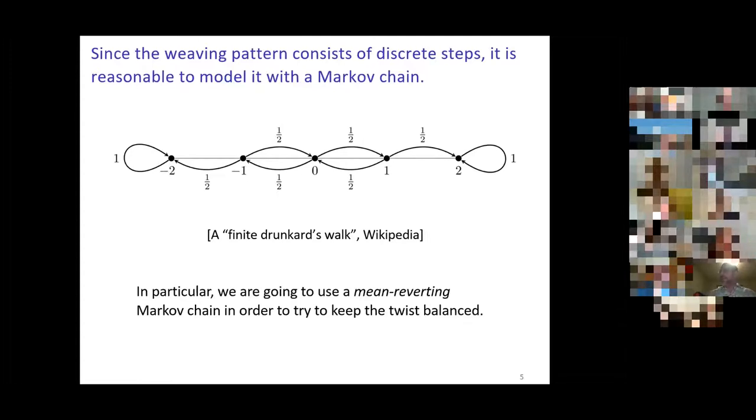Depending on where you are at any point, there's some probability of going one direction or the other. This is the simplest way that you could try to keep the twist from building up: if the twist isn't too much, twist one way with 50% probability, twist the other way with 50% probability. Then if the twist is built up too much, you always—well, in this case I don't know what you always do. This wasn't supposed to be a weaving pattern.